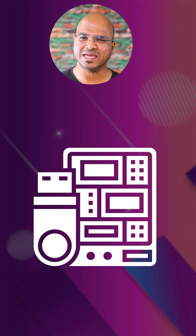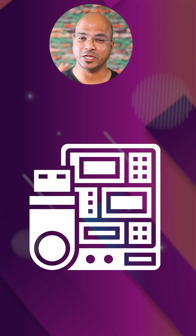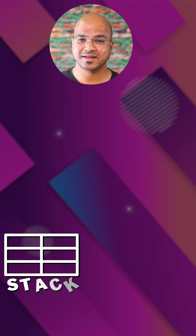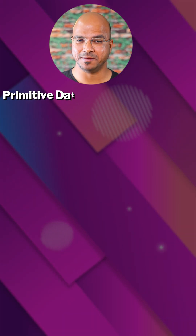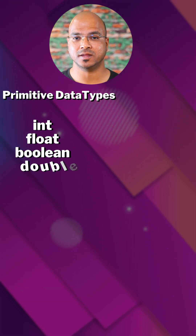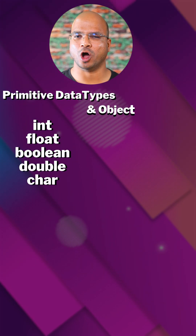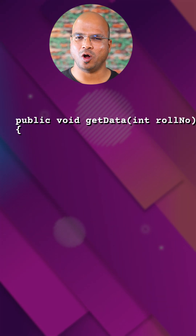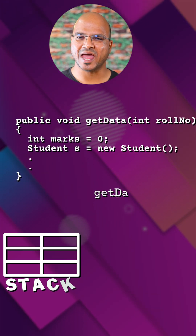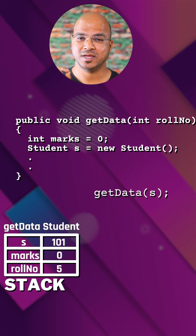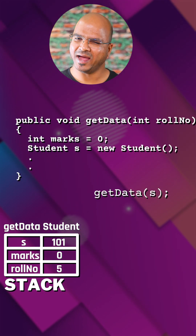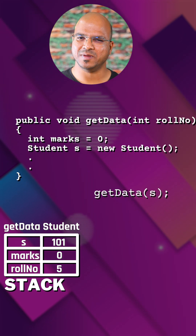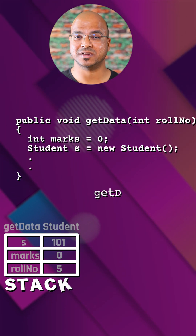In Java, memory is allocated in two main areas: stack and heap. The stack is used to store primitive data types like int, float, and boolean, and the object reference. When a method is called, a new stack frame is created to store the method's local variables and parameters, and the stack frame is removed when the method returns.